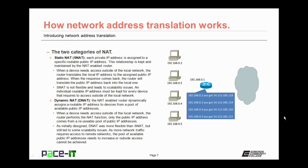There are two categories of NAT. First up is static NAT. With static NAT, each private IP address is assigned to a specific routable public IP address. This relationship is kept and maintained by the NAT-enabled router. When a device needs access outside of the local network, the router translates the local IP address to the assigned public IP address. When the response comes back, the router will translate the public IP address back into a local one. Static NAT is not flexible and leads to some scalability issues. An individual routable IP address must be kept for every device that requires access outside of the local network.